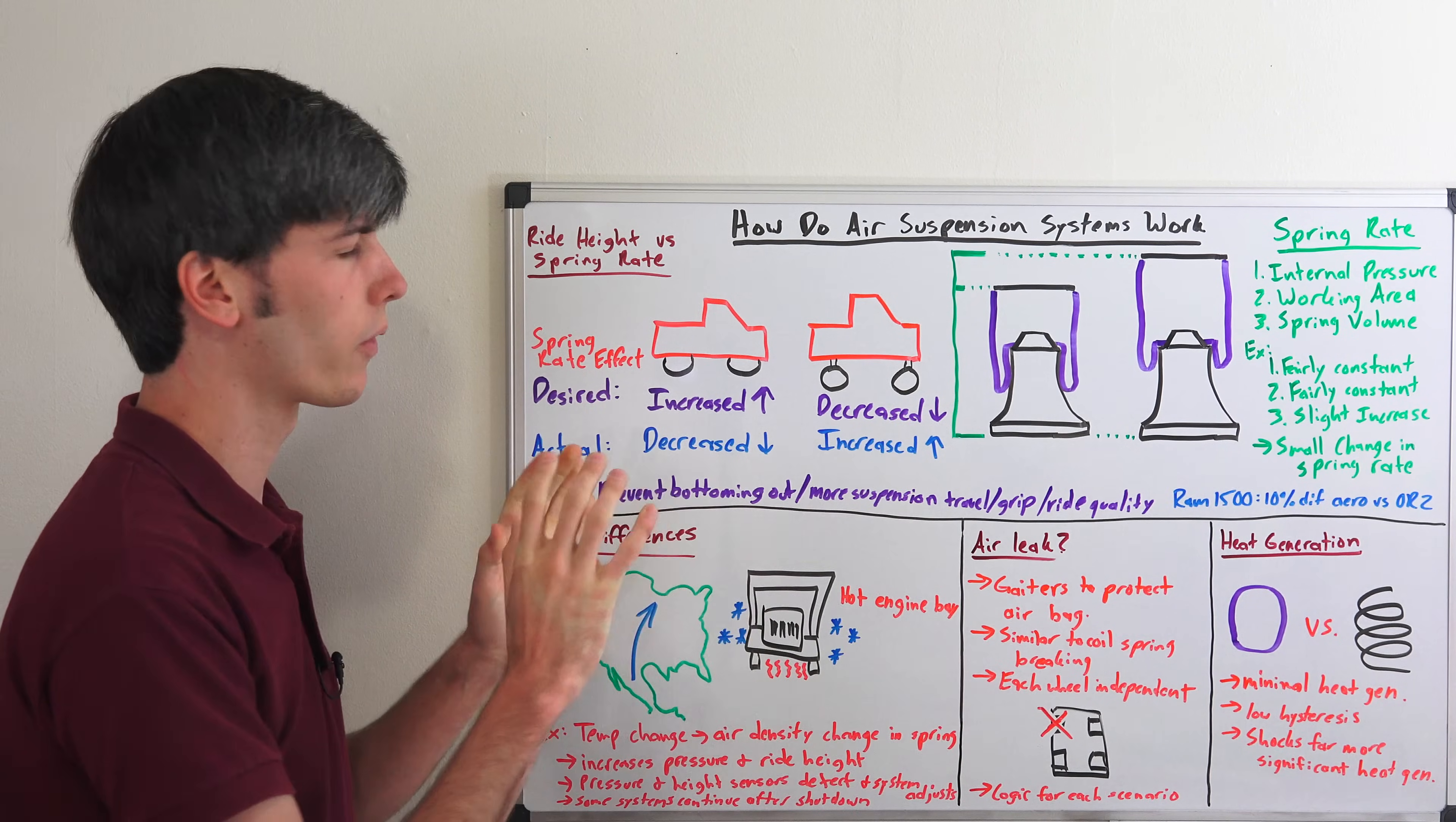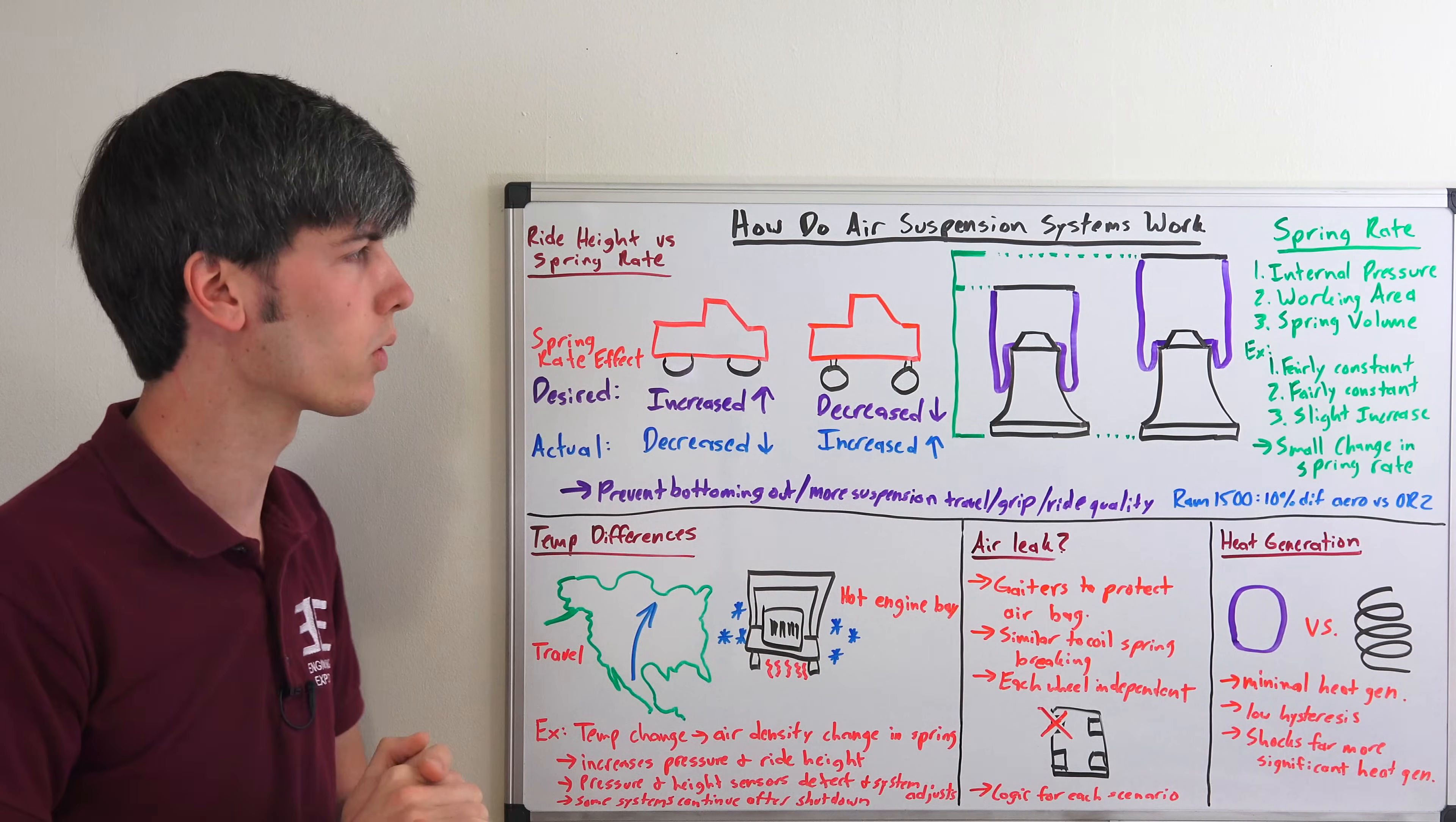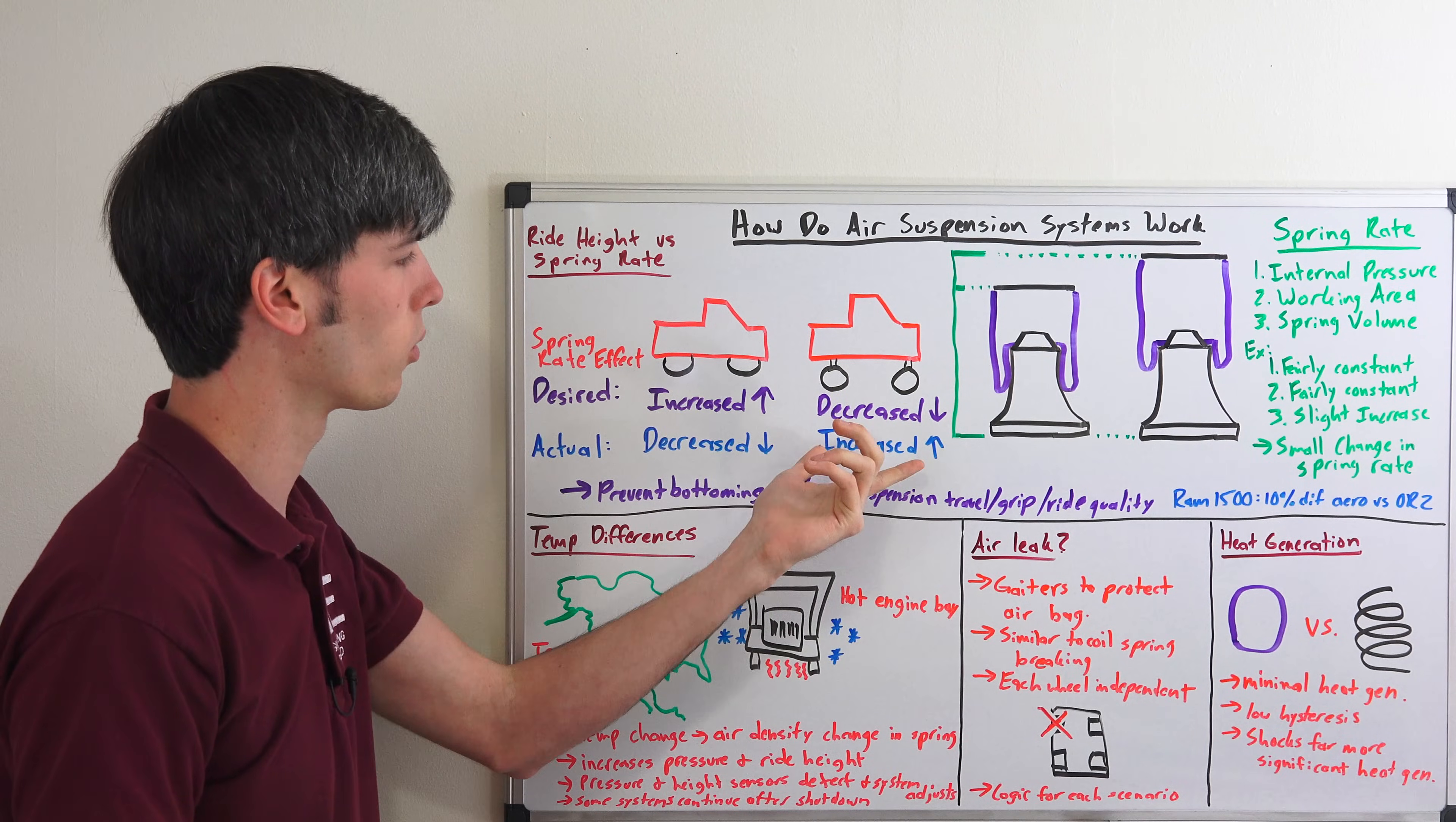If that doesn't make sense to you, the whys of this spring effect - basically if you have it lower why you want it stiffer, if you have it higher why you want it softer - I have a separate video comparing soft versus stiff springs which you may want to check out. And indeed it is true that as you lower the vehicle with an air suspension, you're going to have a decreased spring rate, versus as you raise it you're going to have an increased spring rate.